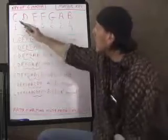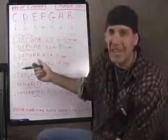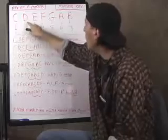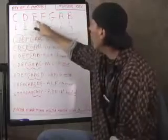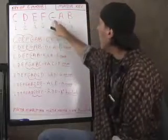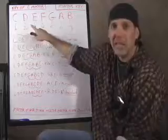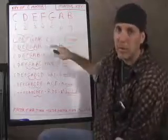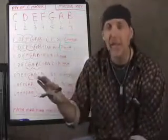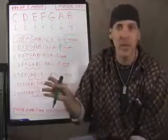C major is C, D, E, F, G. You will never see a C major scale written out C, B, F, E, A, G. It's always in order. That's the definition of a scale, basically.